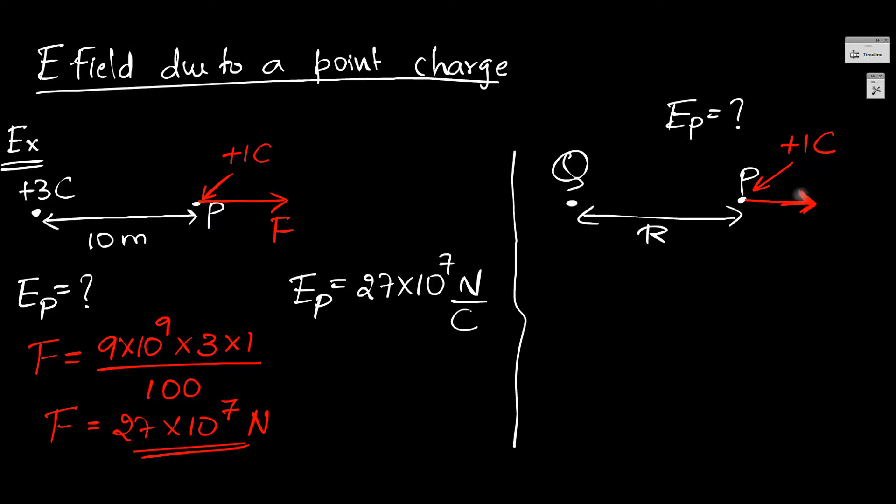So the force on the coulomb is going to be—this is the force on one coulomb—it's going to be k, that's the Coulomb's constant, into Q1 into Q2 divided by R squared. But this is the force on one coulomb, and that by definition is the electric field at point P.